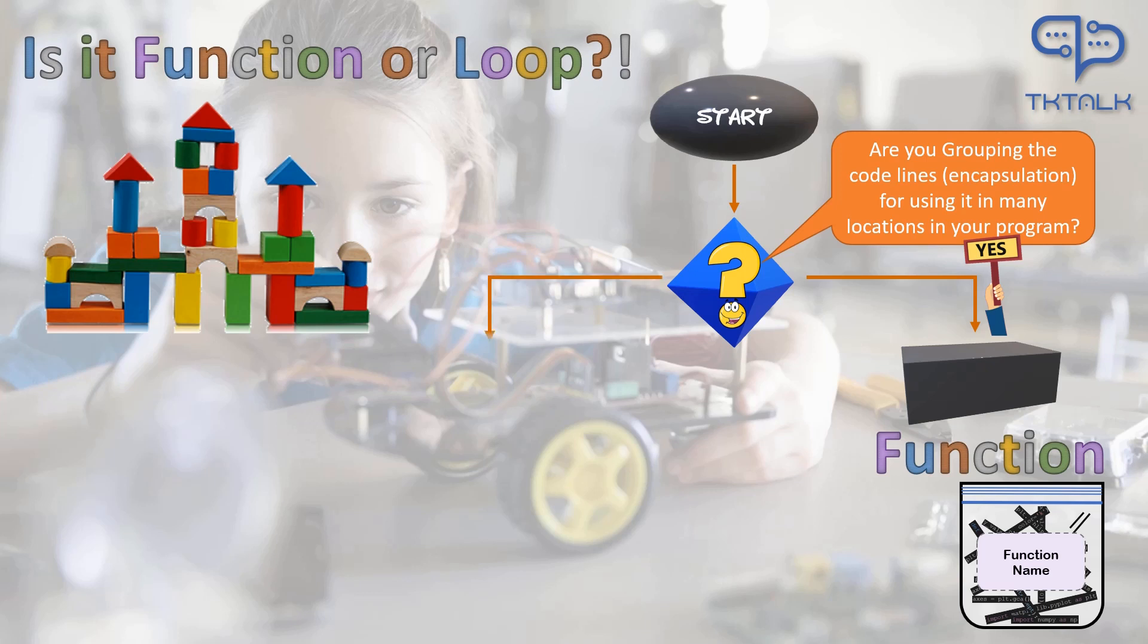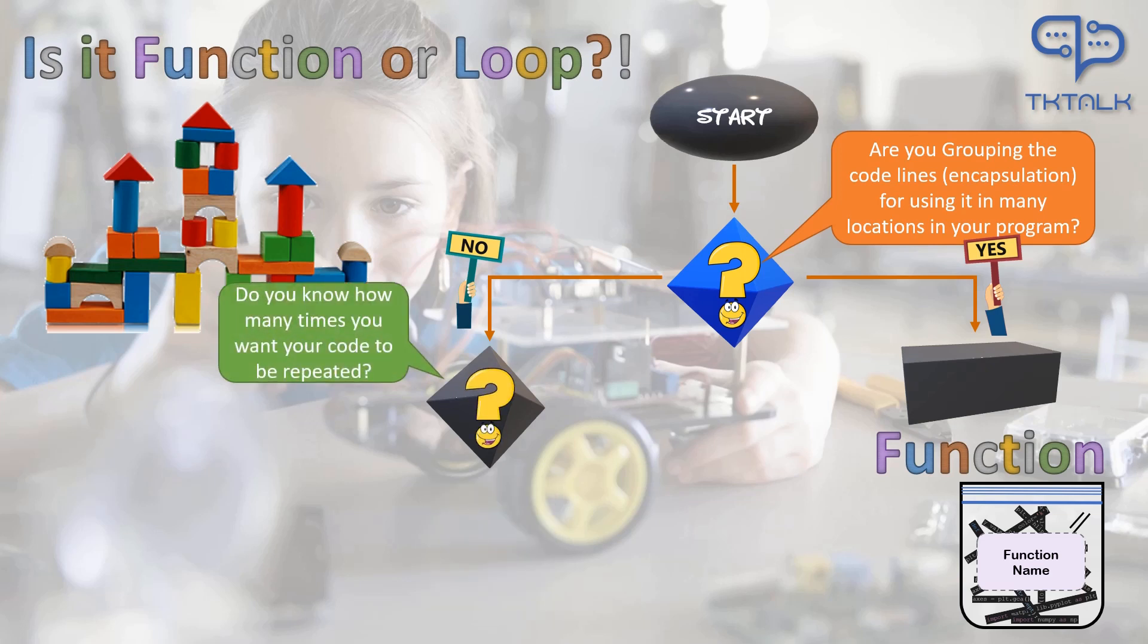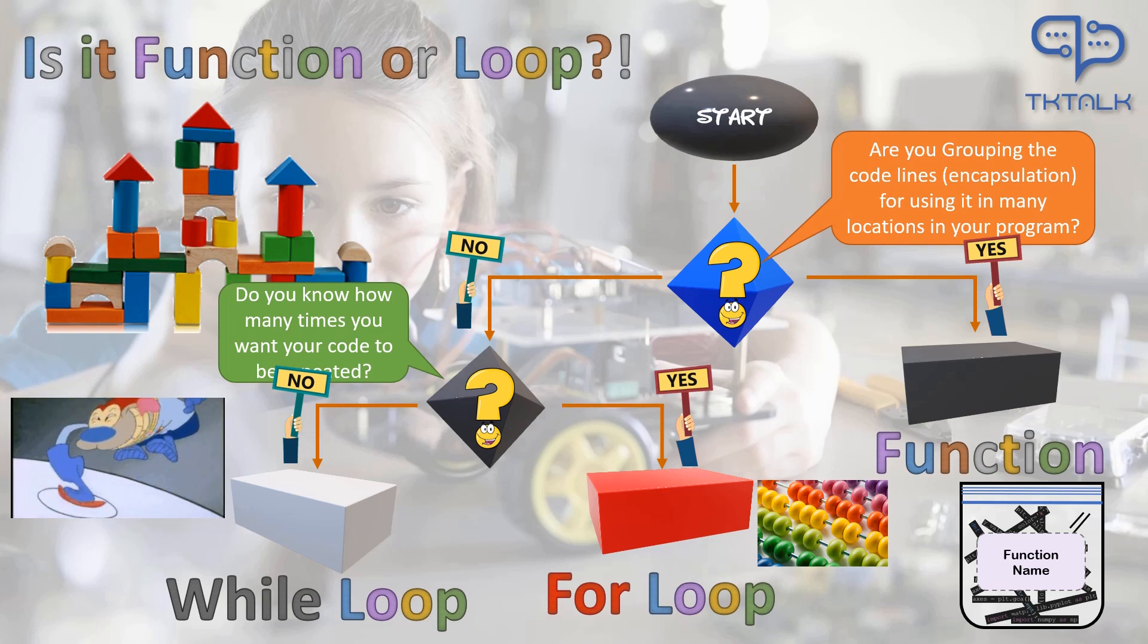Now, if the answer is no, which means I want to repeat using my group of code lines in one location only in my program, then you choose loops instead of functions. No answer would lead to another question. The question here is, do you know for how many times you will need to repeat your group of code lines before starting your loop? If the answer is yes, it means I would know the exact numbers of repetitions and then you select the for loops kind. But if the answer is no, it means I don't know exactly for how many repetitions my code shall be looped, then you choose while loops type where you want to repeat the code until an event will press the stop button.